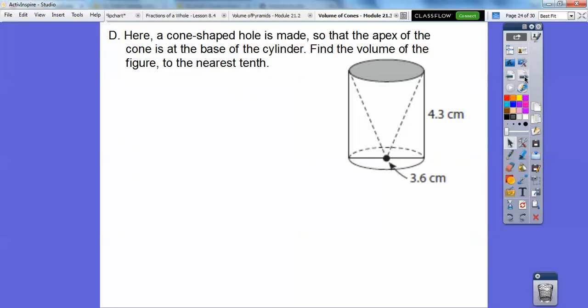All right, so here a cone-shaped hole is made so that the apex, apex is the same as the vertex of the cone, of the cone is at the base of the cylinder, so here's the apex. I like vertex better, but whatever, so find the volume of the figure when we take this cone out.